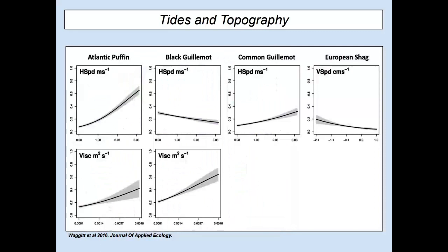Quite simply, birds were using quite distinct areas. Puffins were in the main channel where current speeds were high, and also on the shear lines where turbulence was highest. Black guillemots tended to sit in the slow water but also used the shear lines. Common guillemots were found in the fast water of the main channel. European shags were found in areas where water was being forced down — probably where tidal currents cascade over those slopes. In short, birds were using these features, and interestingly there were species differences which might be linked to their foraging tactics.